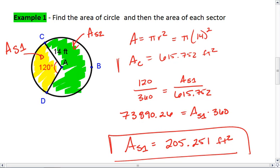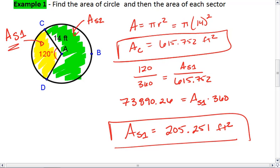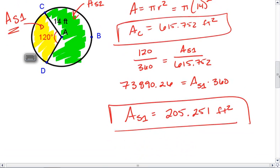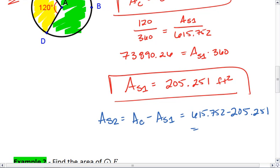So I found the area of the entire circle so far, which is 615.752. The area of the yellow portion, which is 205.251, and now I just need to find the area of the green. You could set up another proportion or just realize that the area of the green is the area of the entire circle minus the area of the yellow. So the area of sector 2 is the area of my entire circle minus the area of sector 1, 615.752 minus 205.251. I get about 410.501 feet squared. That's the area of sector 2.